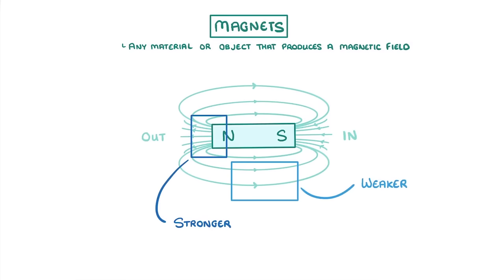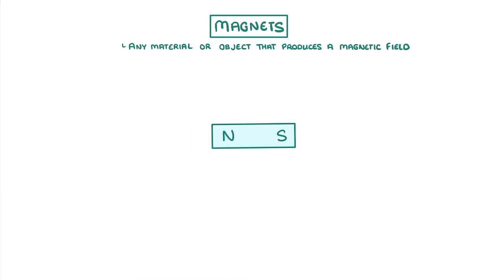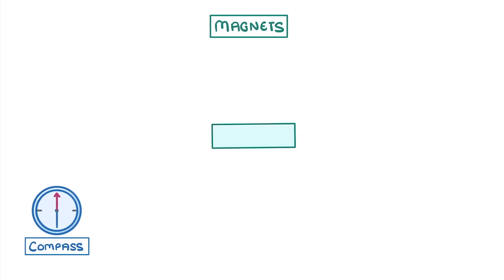Now in real life we obviously can't see the field lines and magnets aren't always labeled with a north and south. However, we can easily find the poles and field lines by using a compass.